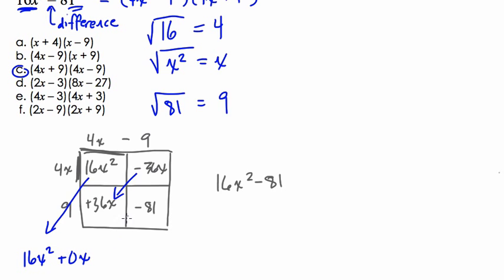These two terms are opposites. They're 0x, which is 0. And then we have negative 81 here. Notice if I simplify this, we don't need 0 times x. That's just 0. So this would give us 16x squared minus 81, which is our original binomial that we're looking for.